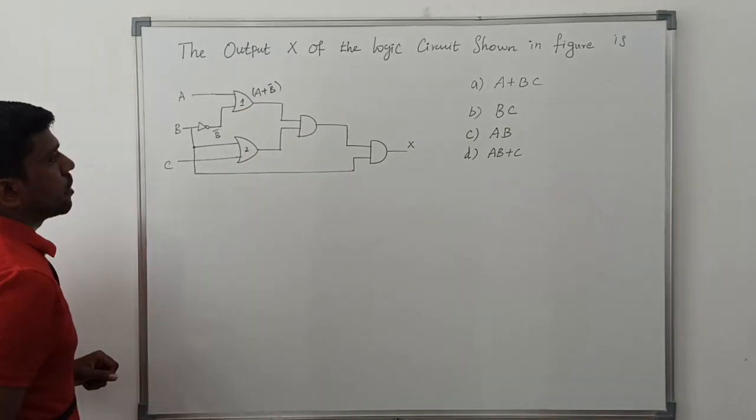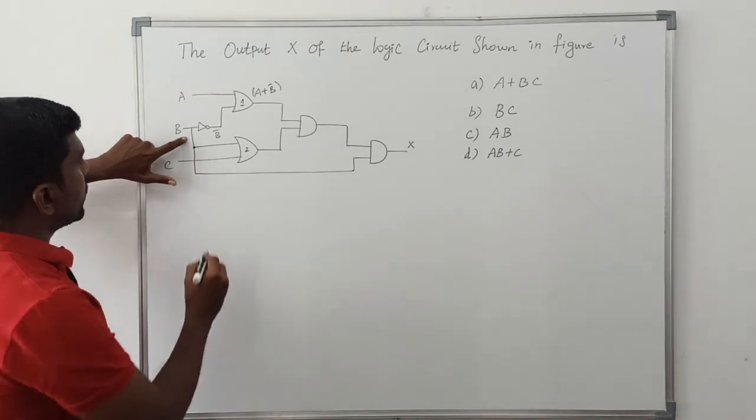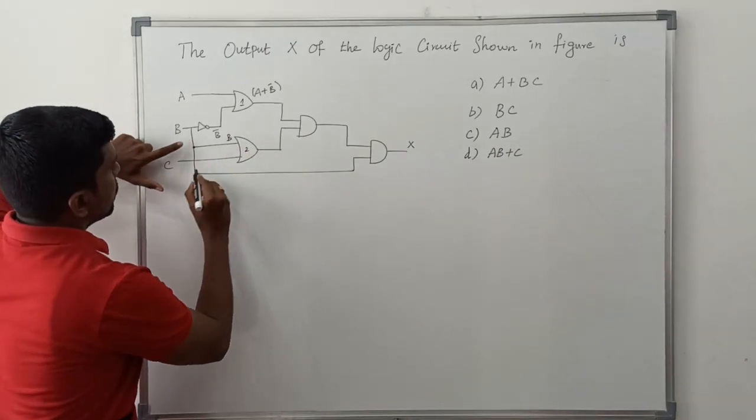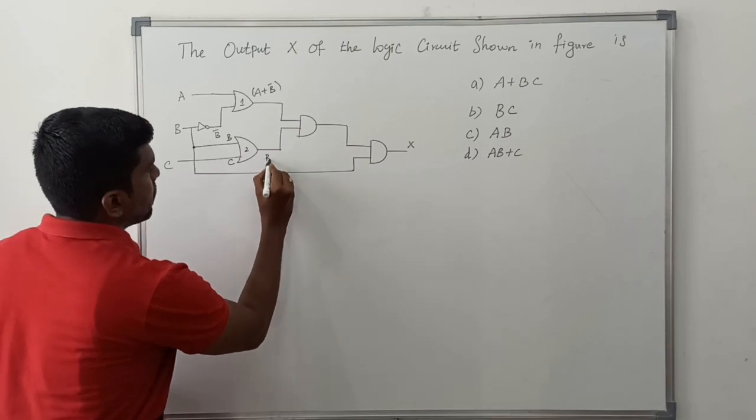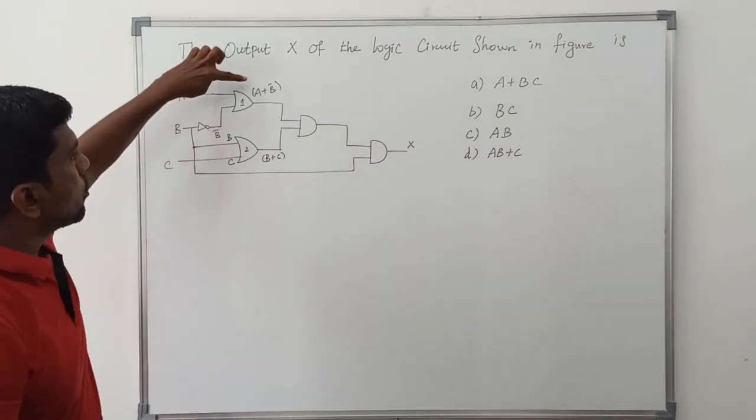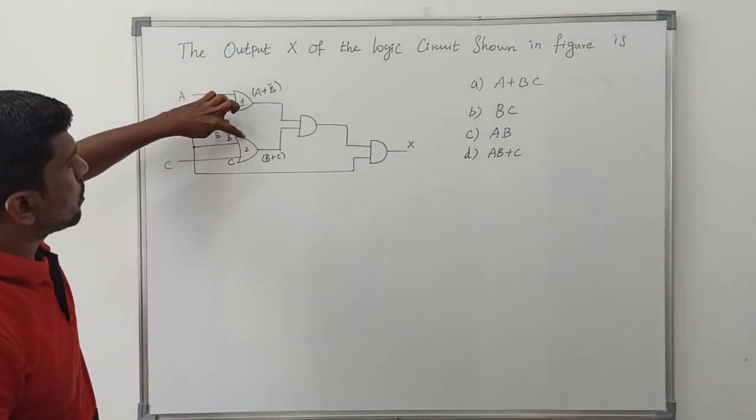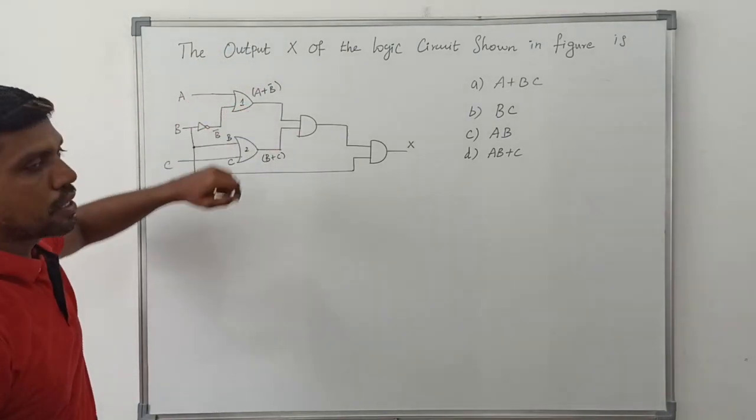Then come to second OR gate. The second OR gate input is B and C, so B plus C. First OR gate output is A plus B bar, second OR gate output is B plus C.